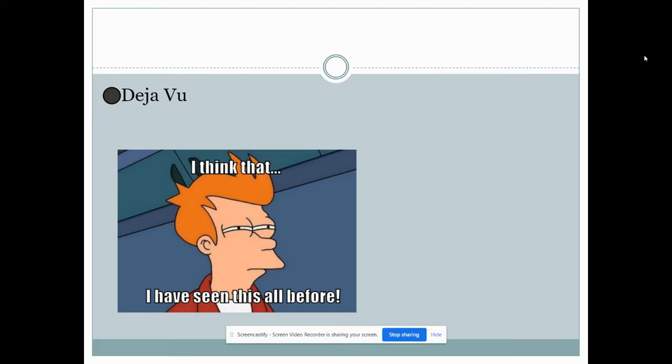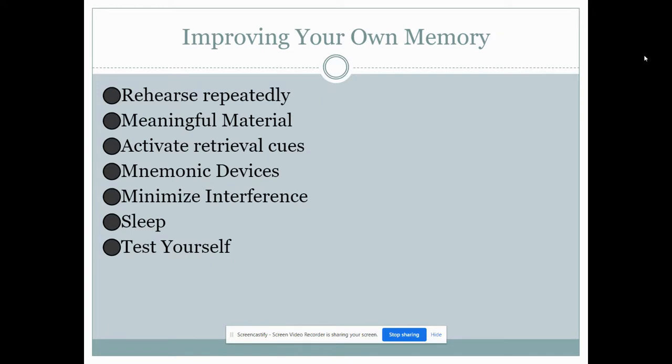So how do we improve our own memory? What do we do? Well rehearsing repeatedly will help create the storage process that will put things into your long-term memory. Make the material meaningful when you connect it to yourself you have more relevance. Activate retrieval cues so environmental cues or mental state cues. This could be like getting good rest and or having a specific type of breakfast in the morning. Create mnemonic devices to allow us to chunk information together. Minimize interference so really look at the key details and differences between things that are similar so that you don't mix them up. Sleep. If we don't sleep our ability to remember is going to be very difficult and finally test yourself because when you test yourself you're stimulating yourself with the knowledge that you'd already developed before.